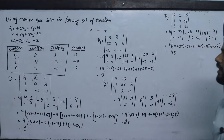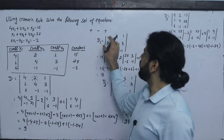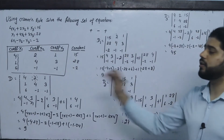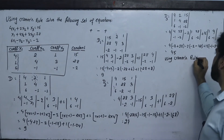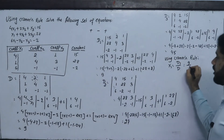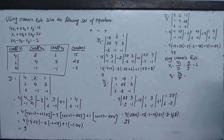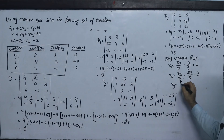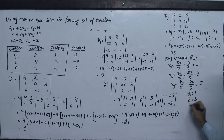Now we have D, D1, D2, and D3. x1 equals D1 divided by D equals 9 divided by 9 equals 1. x2 equals D2 divided by D equals 27 divided by 9 equals 3. x3 equals D3 divided by D equals 45 divided by 9 equals 5. Therefore x1 equals 1, x2 equals 3, x3 equals 5.